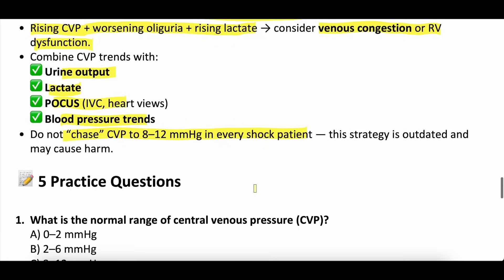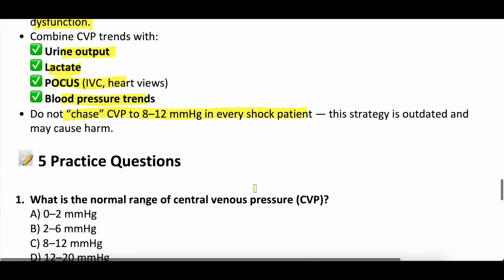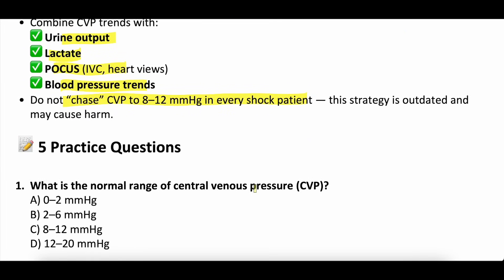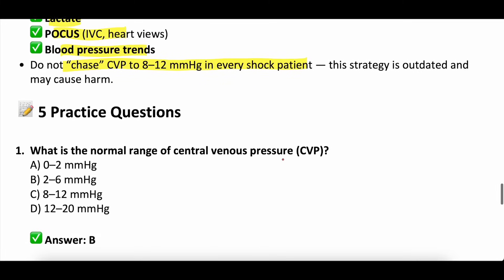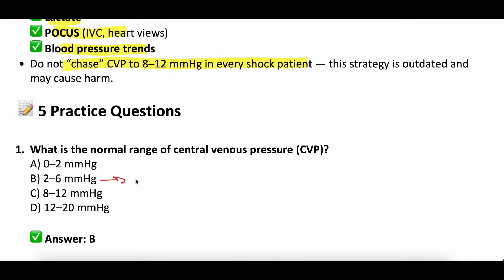Let's get into practice questions. We'll read the question, read the answer options, and go right into the right answer — pause if you need more time. Question number one: what is the normal range of central venous pressure? A: zero to two, B: two to six, C: eight to 12, D: 12 to 20. The correct answer is B — two to six is classically quoted, but the CVP normal we think about is more like four to eight.